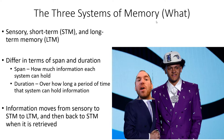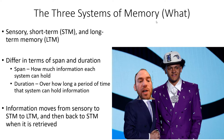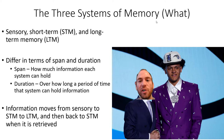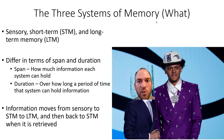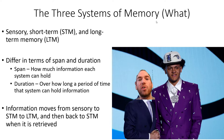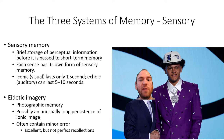There are three systems of memory: sensory memory, short-term memory, and long-term memory. They differ in terms of span — how much information each system can hold — and duration — how long a period of time. Information moves from sensory memory to short-term memory to long-term memory, and then back to short-term memory when it's retrieved. For a general psychology class, this serves as the building blocks of memory.